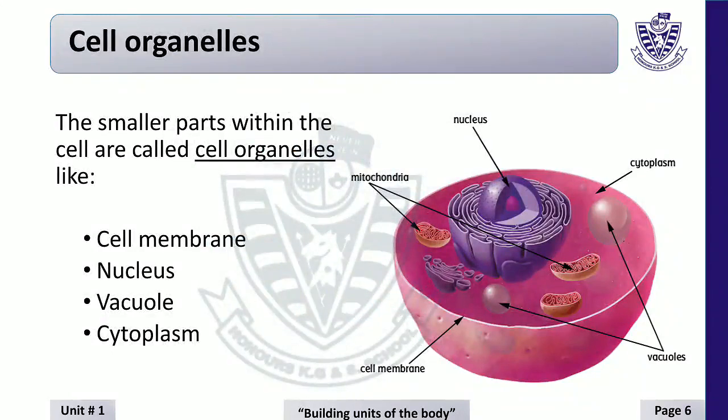Cell organelles. The smaller parts within the cell are called cell organelles, like cell membrane, nucleus, vacuole, and cytoplasm. Students, these parts are in the cell and perform different activities.